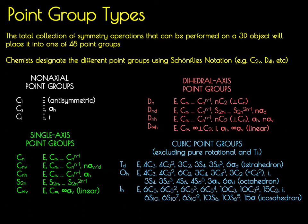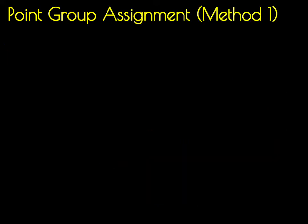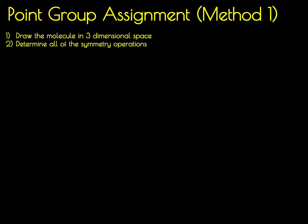Now I'm going to go through two different methods for assigning a molecule to a point group — one much more difficult and one much easier. The first method involves drawing the three-dimensional shape of the molecule, then determining every single symmetry element it displays. Following that, you list them out, look them up in a table, and determine which point group those symmetry elements correspond to.